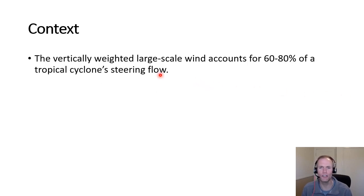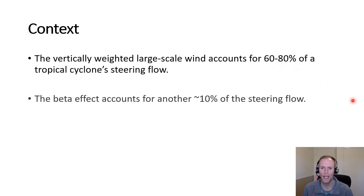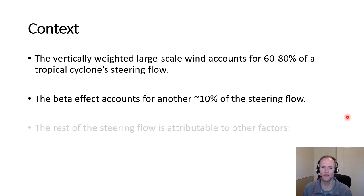As a summary of where we've been through this video series: the vertically weighted large-scale wind accounts for 60 to 80 percent of a tropical cyclone's steering flow, and the beta effect accounts for another 10 percent. So we're already at 70 to 90 percent of the overall steering flow. There are other factors that can account for the remaining 10 to 30 percent of variation in tropical cyclone motion.